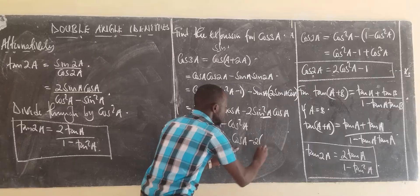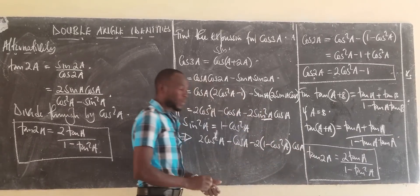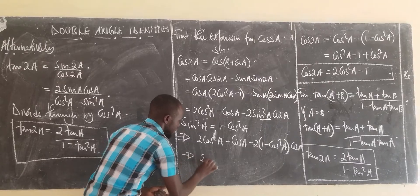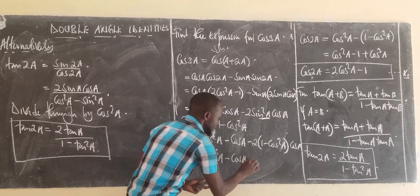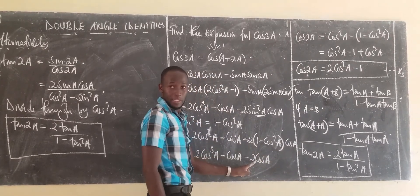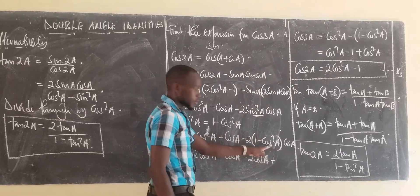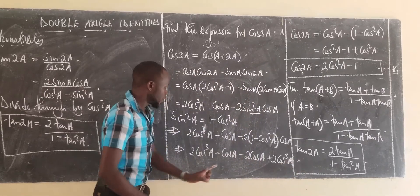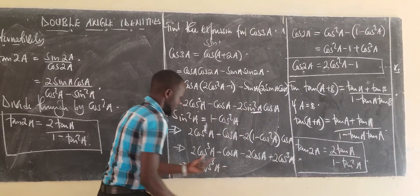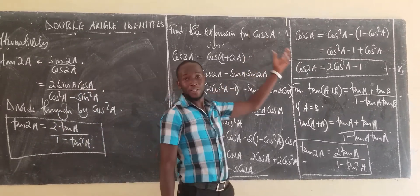Expanding the last term: minus 2 cos A plus 2 cos cubed A. Combining all terms: 2 cos cubed A minus cos A minus 2 cos A plus 2 cos cubed A. Combining the cos cubed terms gives 4 cos cubed A; combining the cos A terms gives minus 3 cos A. So the expression for cos of 3A is 4 cos cubed A minus 3 cos A.